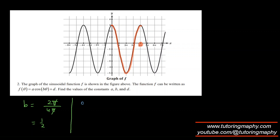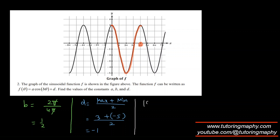Now let's find D: maximum plus minimum divided by 2. Maximum is 3, minimum is negative 5, so 3 + (−5) over 2 = −2 over 2 = −1. For the amplitude, maximum minus minimum over 2 gives 8 over 2 = 4. So the absolute value of A is 4.